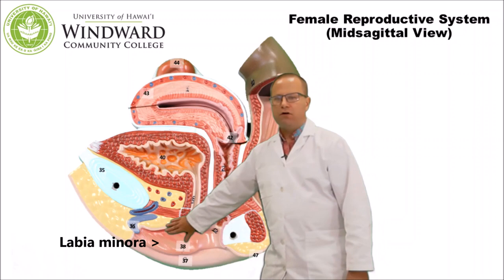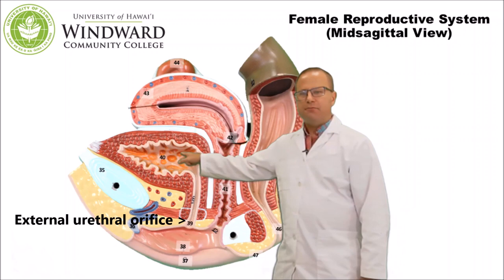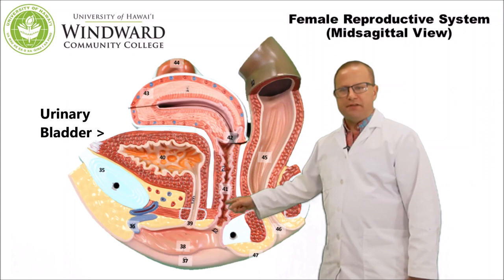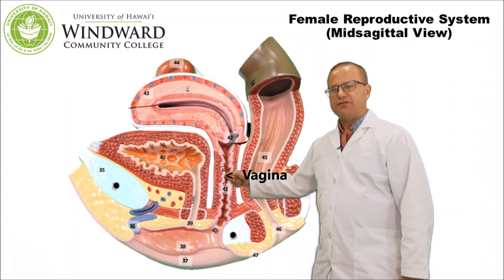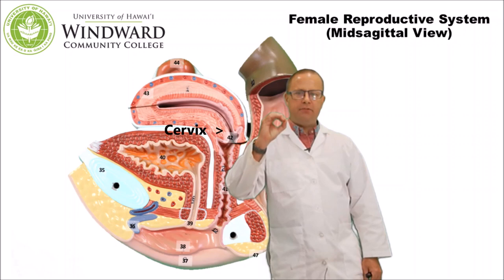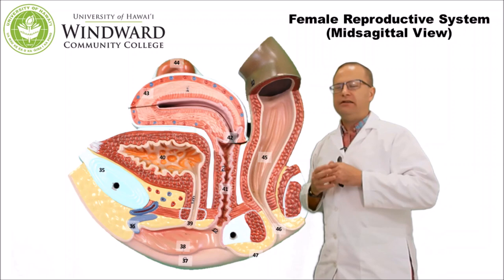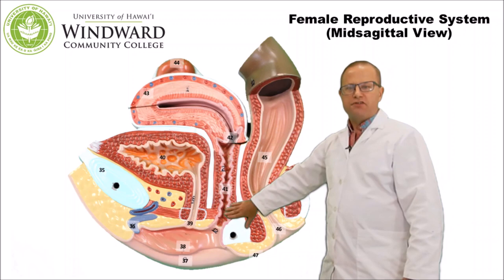Coming up from here is the external urethral orifice where the urethra empties — this is the female urethra coming from the urinary bladder, so don't confuse it with another tube. The next tube over is the vaginal canal or vagina, where the penis is inserted during sexual intercourse. Separating the vagina from the uterus is the cervix, a narrow opening usually closed by mucus, keeping the reproductive tract isolated from bacteria except during ovulation. Around day 14 of the cycle, the mucus plug loosens, allowing sperm to move into the uterus and potentially into the fallopian tube for fertilization.